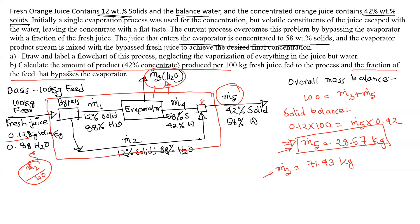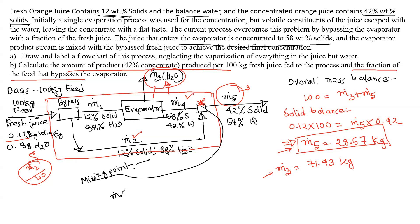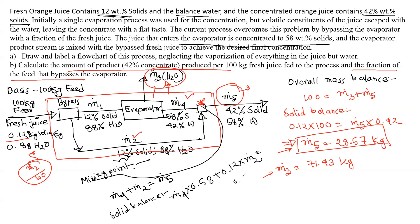At the mixing point, we set up the balance with two unknowns. We write total balance and solid balance. Taking M4 and M2 mixing to give M5: the solid balance for the mixing point gives M4 × 0.58 + 0.12 × M2 = 0.42 × M5.